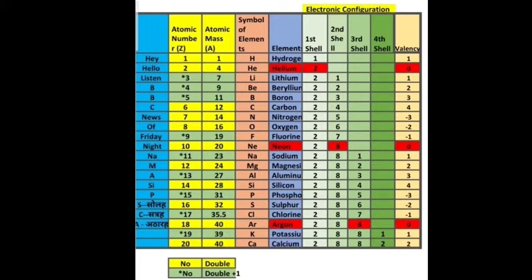First, mark stars at atomic numbers 3, 4, and 5. Then leave three spaces and mark stars alternatively, giving you 9, 11, 13, 15, 17, and 19. For the yellow cells without a star mark, you simply double the atomic number — so atomic number 6 gives mass 12, atomic number 7 gives 14, and so on.